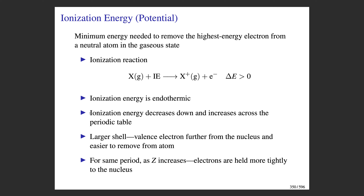As you go across the periodic table, ionization energy increases. Going down the table it is easier to pull electrons from larger shells that are further from the nucleus. Within the same period, the electrons are at roughly the same distance from the nucleus, but the number of protons increases as you go across. More protons means a stronger hold on the electrons, making it harder to pull them off — hence ionization energy increases going across the periodic table.